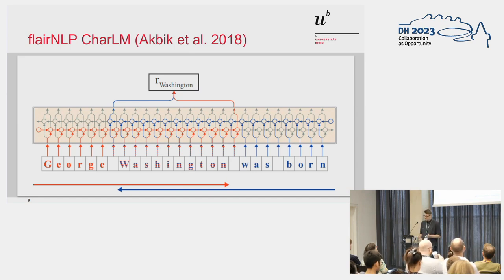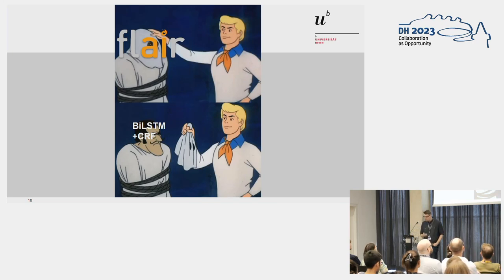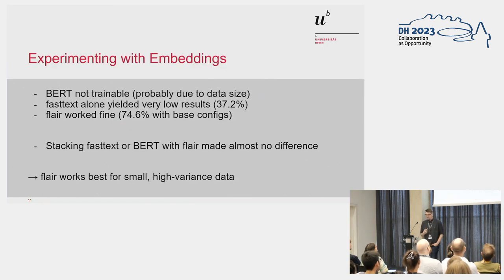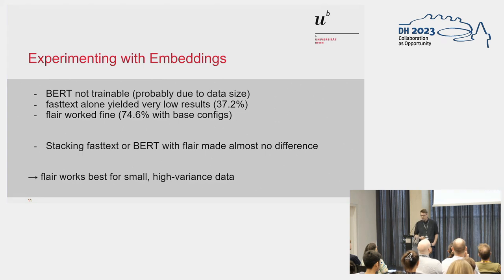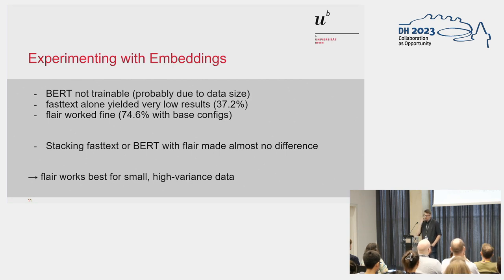This is of course only the language model part. Then there's the sequence tagger part, which is very simple — it is just the standard for sequence tagging at that time: bidirectional LSTM with conditional random fields as a classifier. So first we experimented with the embeddings. BERT, the most modern of those we tested, just didn't work for us; we suspect it's due to the very small datasets we have available. FastText by itself was also scoring only low results. Flair, though, just out of the box already scored pretty good results on the small dataset: 74.6% F-score, which we can't complain about.